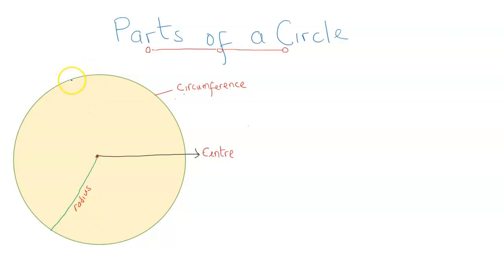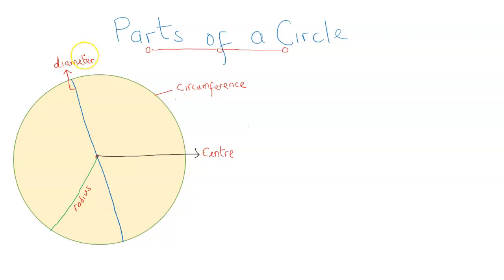Another thing we are going to identify is the straight line that's drawn through the center of the circle to touch two points on the circumference. That line is called a diameter. If we look at the diameter closely, its length is going to be twice the length of the radius, because the radius is drawn from the center to the circumference, while the diameter is drawn through the center to touch two points on the circumference.